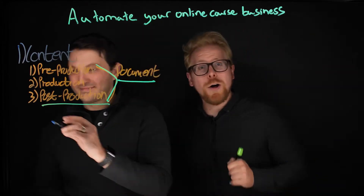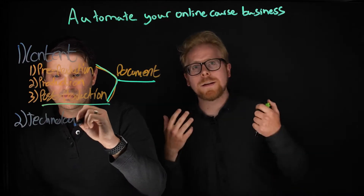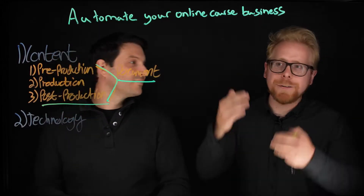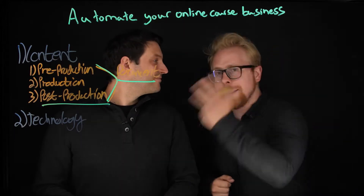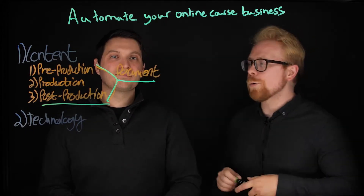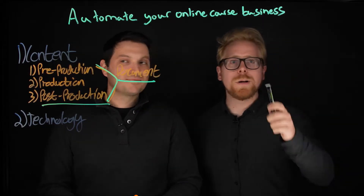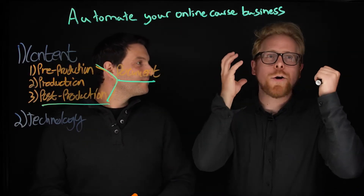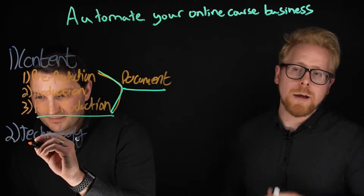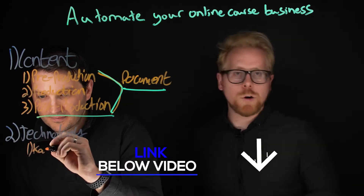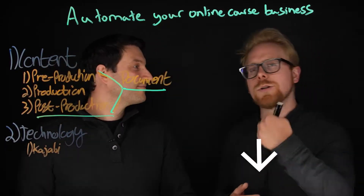Now let's talk about technology — the second pillar of e-learning. The great thing about technology is there are specific LMSs out there that allow you to automate your course. The first one we really like is Kajabi — link below this video for our Kajabi affiliate link. By hitting that link you'll show your support to us and get a 30-day free trial instead of just a 14-day free trial.